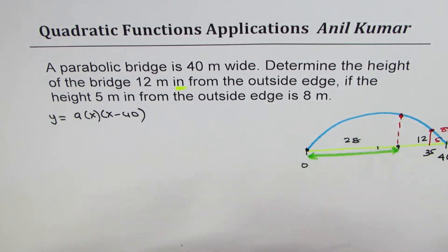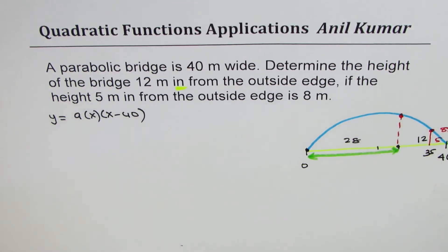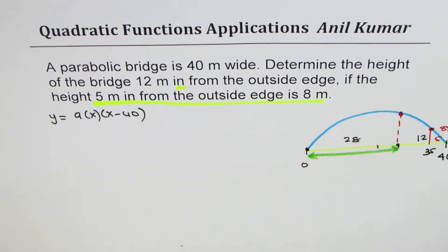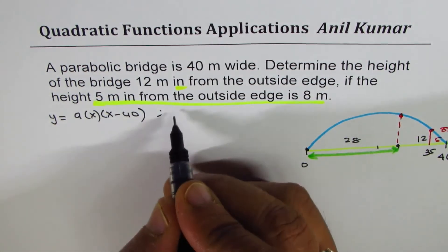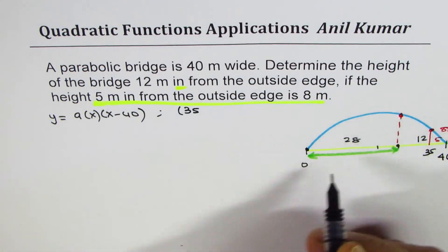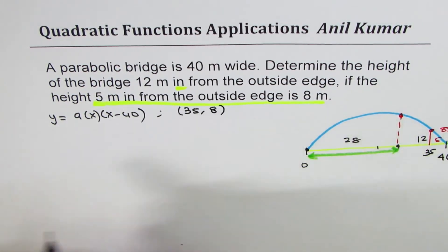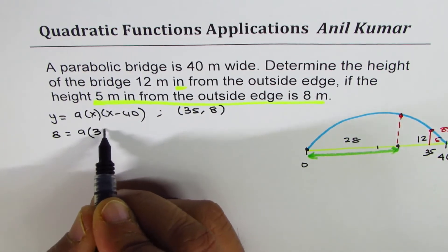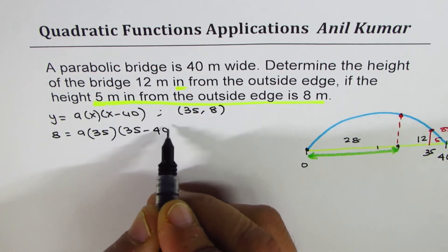To get the value of a, we are actually given a point here which is 5 meters in, 8 meters high. That really means that the point is 35 from our zero and the height is 8. So we'll substitute these two values - y value is 8 and x value is 35, 35 minus 40.